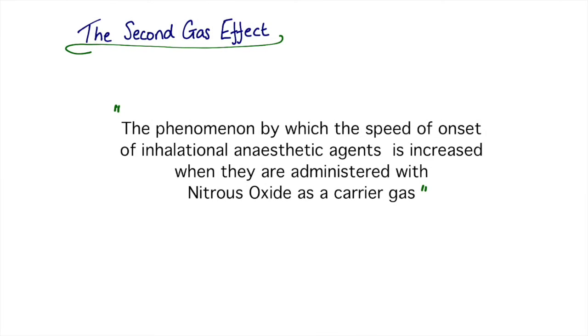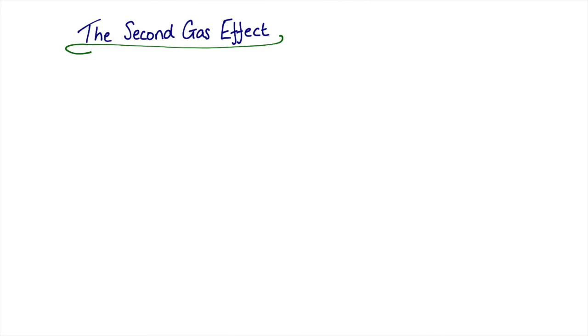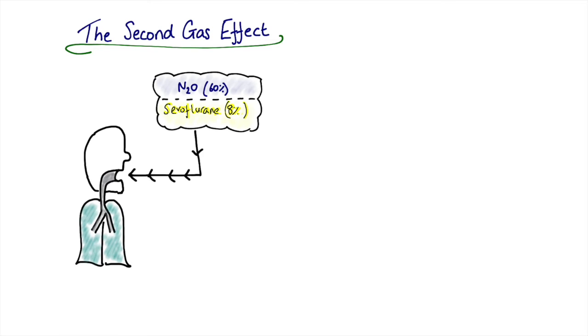Next we're going to talk about the second gas effect, which is the phenomenon by which the speed of onset of inhalational anesthetic agents is increased when they are administered with nitrous oxide as a carrier gas. And to understand that, we can go back to our patient.